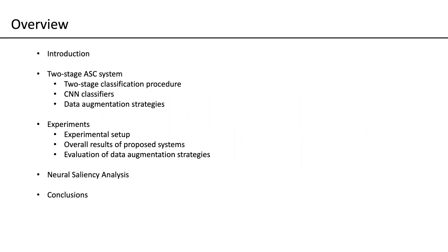At the beginning, let's go through the overview of this presentation. I will give the introduction first about the problem definition and the background information. Then I'm going to talk about our proposed two-stage system, which mainly includes three parts: the two-stage classification procedure, the CNN classifiers, and the data augmentation strategies. Then I'm going to talk about our experiments, including the experimental setup, the overall results, and the evaluation of different data augmentation strategies. I will also present some results from the neural saliency analysis, and finally give the conclusions.